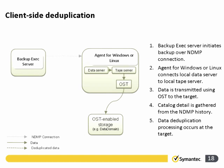For client-side deduplication, the Backup Exec server makes an NDMP connection to the Agent for Windows or Linux. The agent requests data from the local machine using its data server component to package everything up. It then uses the tape server role and the OST plug-in to go directly to that OST-compliant RAID array — for example, a Data Domain array. All that crosses the wire are full files, packaged in OST format so the OST-compliant storage device can use its CPU and memory to evaluate what needs permanent storage.